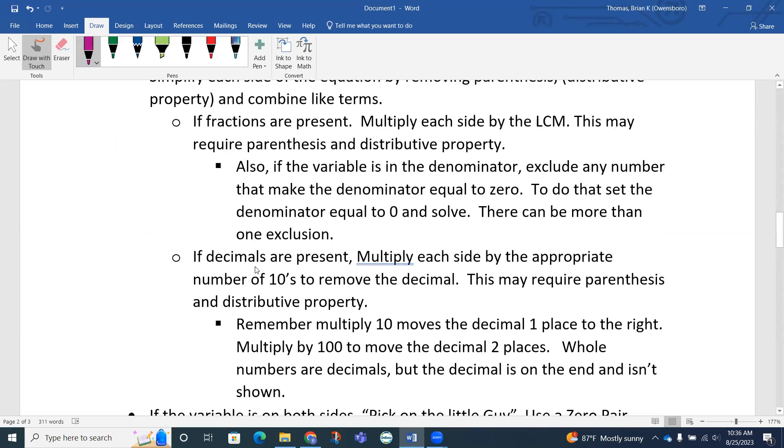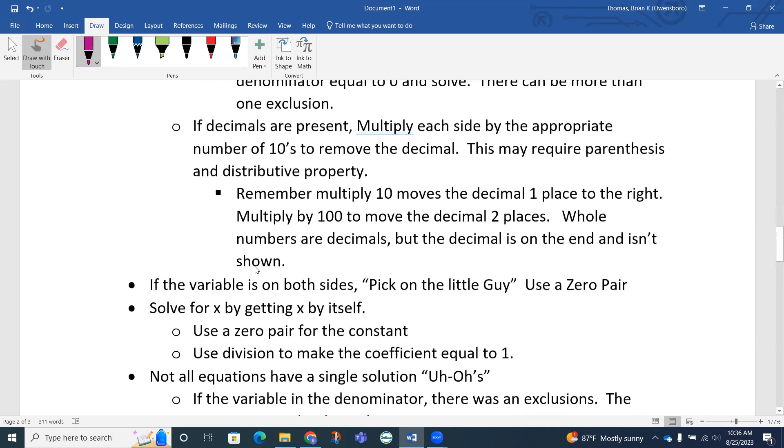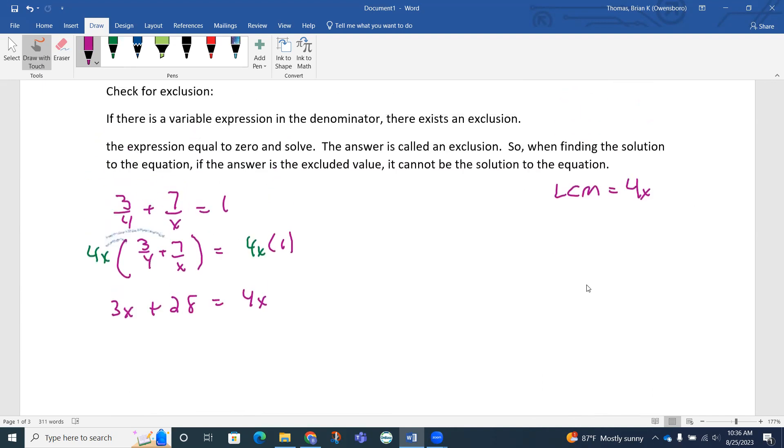We didn't have any decimals present, so we don't have to worry about that. Our next step is if the variable is on both sides, we want to pick on the little guy and use a zero pair. If I look at this equation, notice the variable x is on the left side of the equation and it's on the right side. We want to get it on the same side. The way to do this, we use a zero pair. 3x and 4x, I would consider 3x littler. I want to zero out the 3x by using a zero pair, in other words, its opposite. The opposite of 3x is I want to add a negative 3x, or subtract 3x, but I have to do that to both sides to keep the property of equality, keep the equation equivalent. By doing so, the only thing left over here is 28, and 4x take away 3x is 1x, or we just call that x.